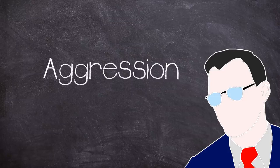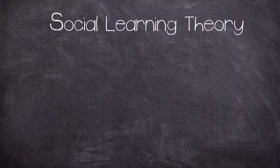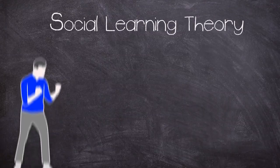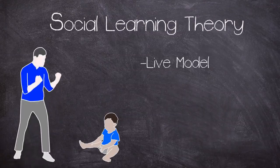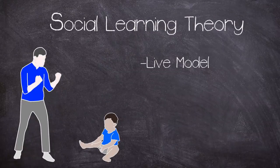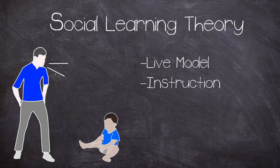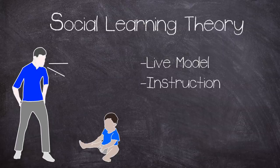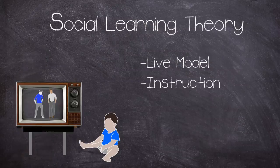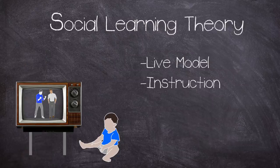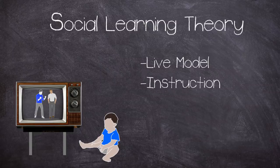In social learning theory three models of observational learning are posited. Live models where a person is demonstrating the desired behaviour to a participant. Verbal instruction in which an individual describes the desired behaviour in detail and instructs the participant in how to engage in the behaviour. And symbolic in which modelling occurs by means of the media including movies, television, literature and radio. Stimuli can either be from real or fictional characters.